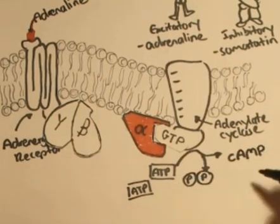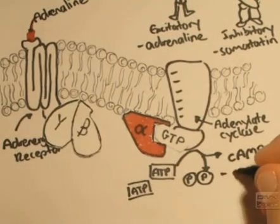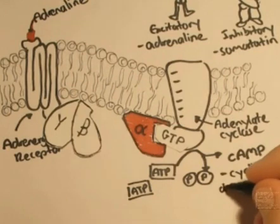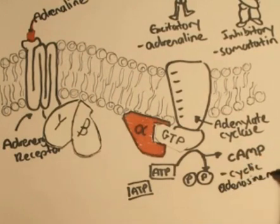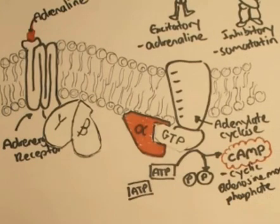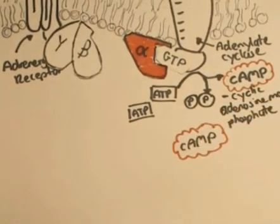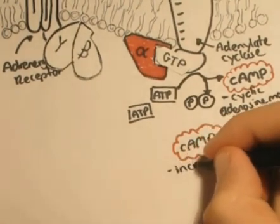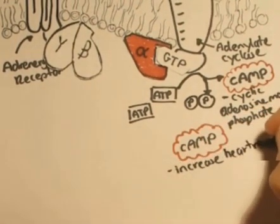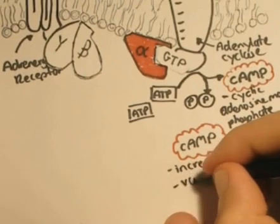Adenylate cyclase converts ATP into cyclic AMP and releases two phosphates in the process. ATP, as you know, is adenosine triphosphate and is the energy currency in the body. Cyclic AMP stands for cyclic adenosine monophosphate. Cyclic AMP is the second messenger. Cyclic AMP causes increased heart rate, constricted blood vessels, because these are the effects of the hormone adrenaline.